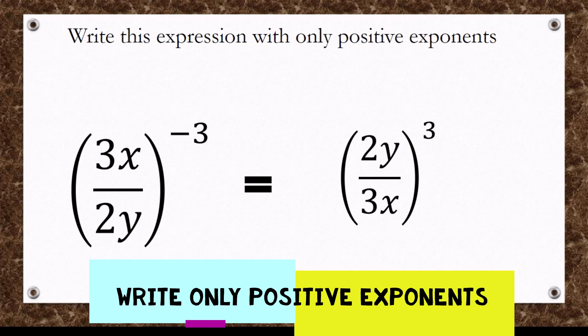For us to do it right, we have to turn B to become B divided by A. So as you can see here, 2y divided by 3x, and then the 3, which is the exponent, becomes positive.